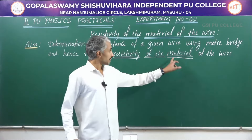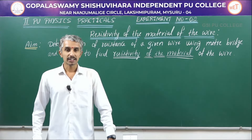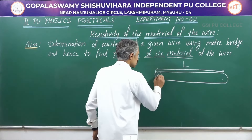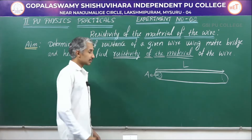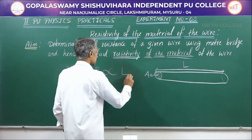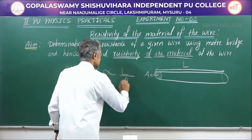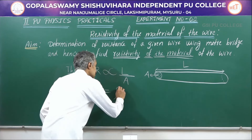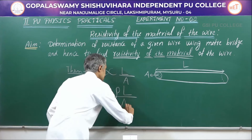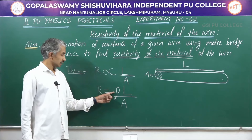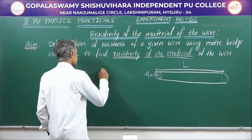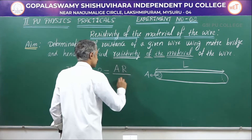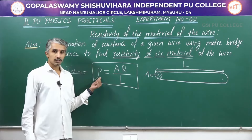Resistivity is the property of the material. We will recall some theory related to resistivity. If a wire has length L and area of cross section A, then resistance is directly proportional to length and inversely proportional to area. Taking out the proportionality gives a constant, and resistance equals the constant resistivity multiplied by length divided by area. Rearranging, resistivity equals area of the wire multiplied by resistance divided by length of the wire.